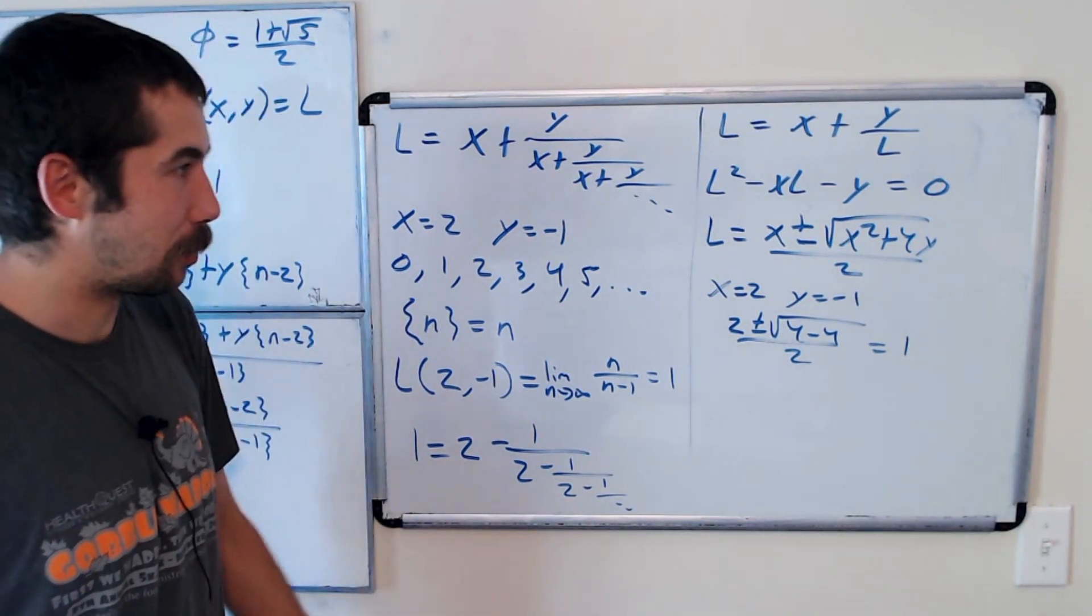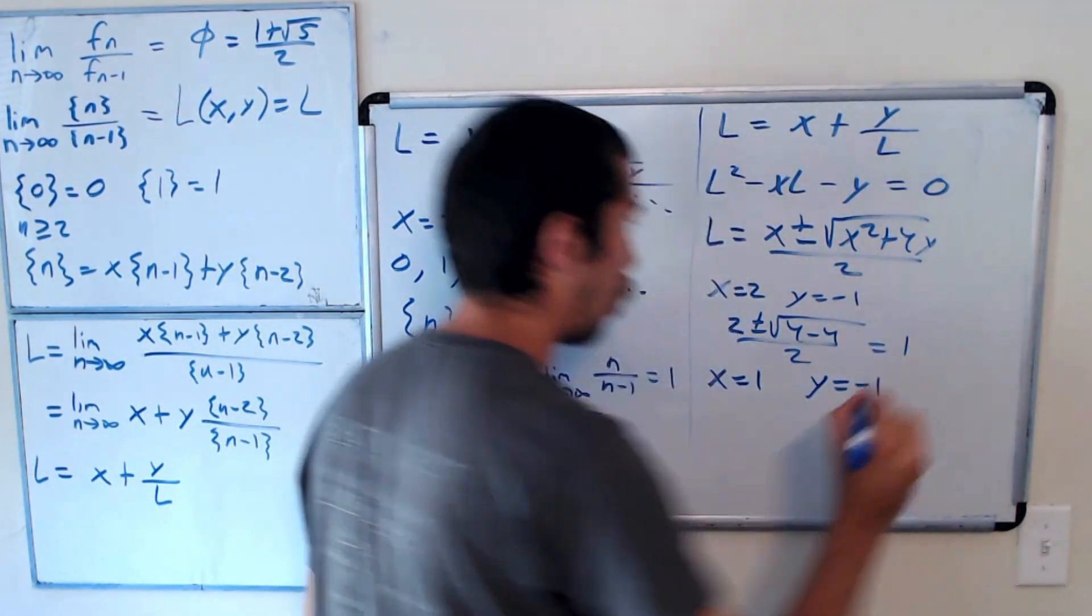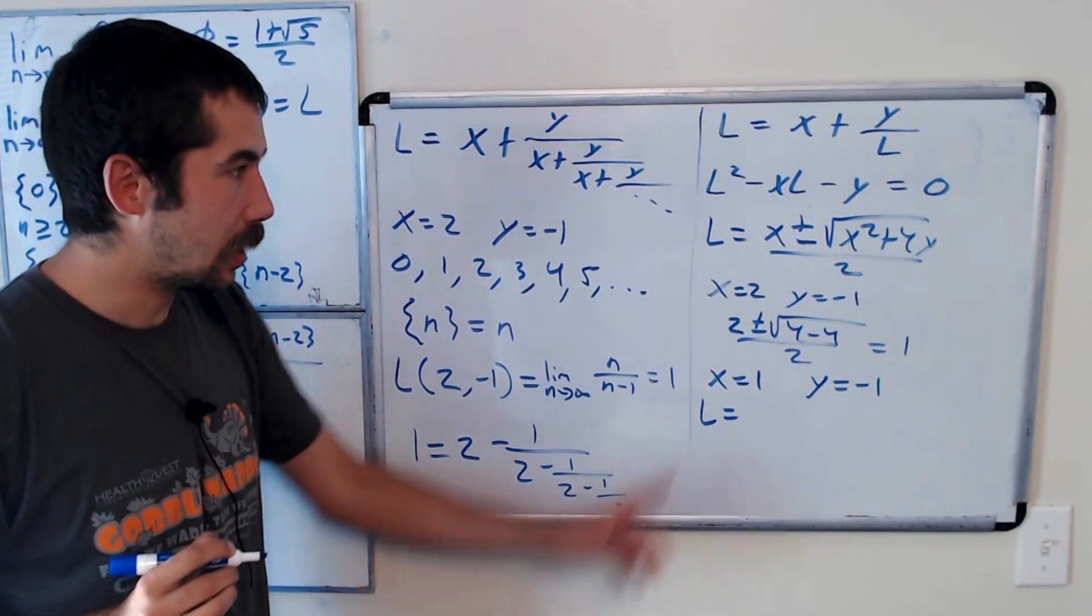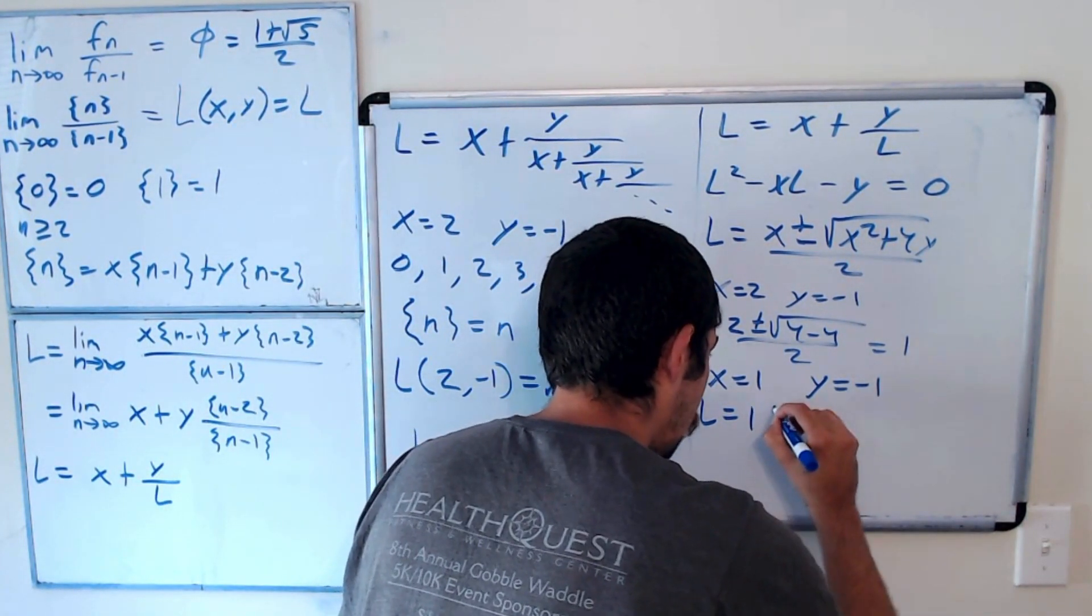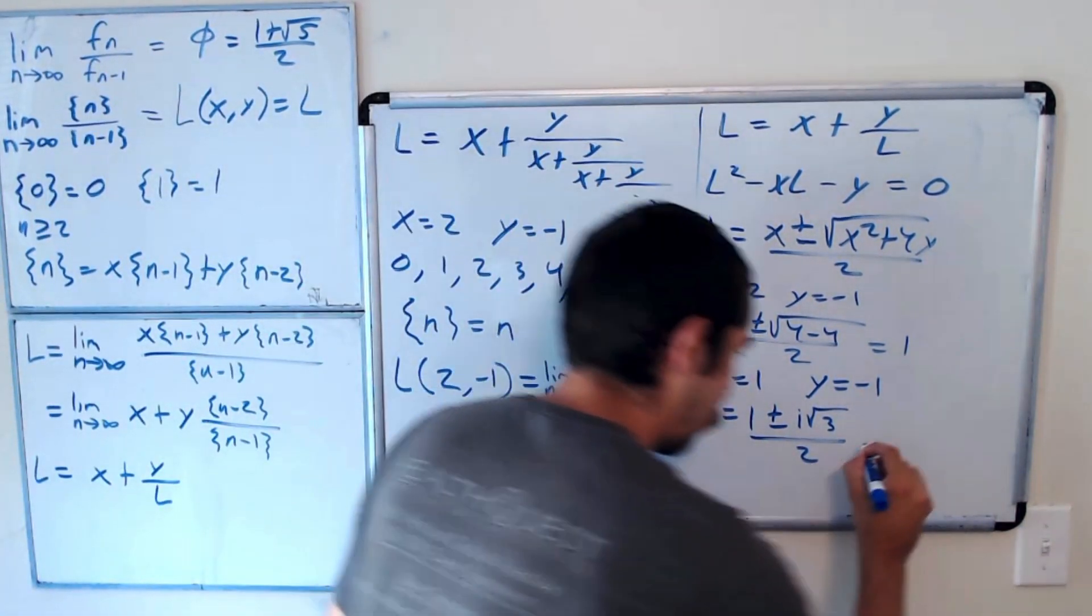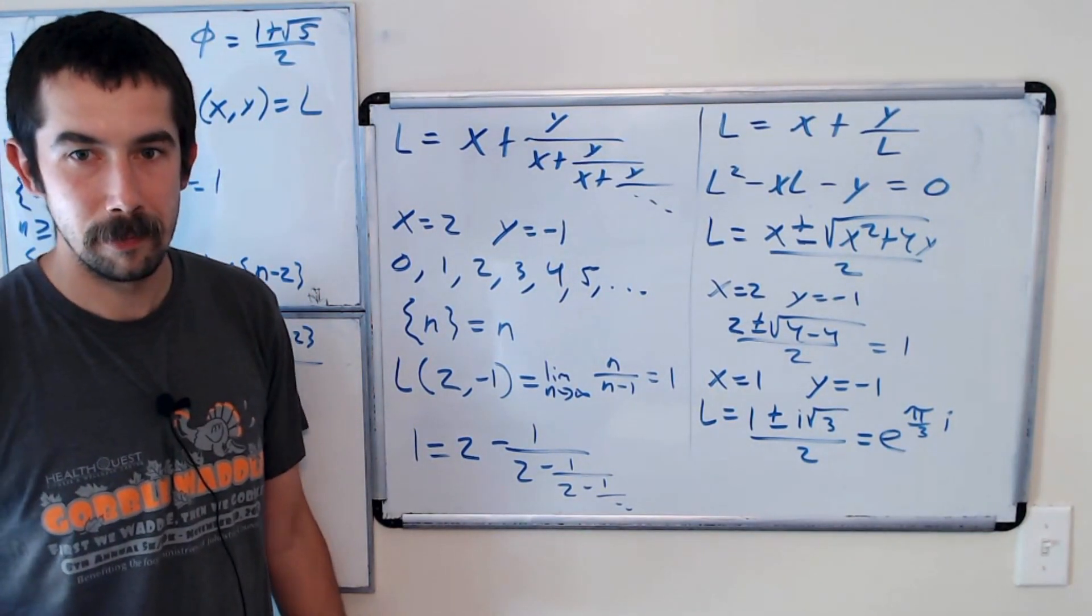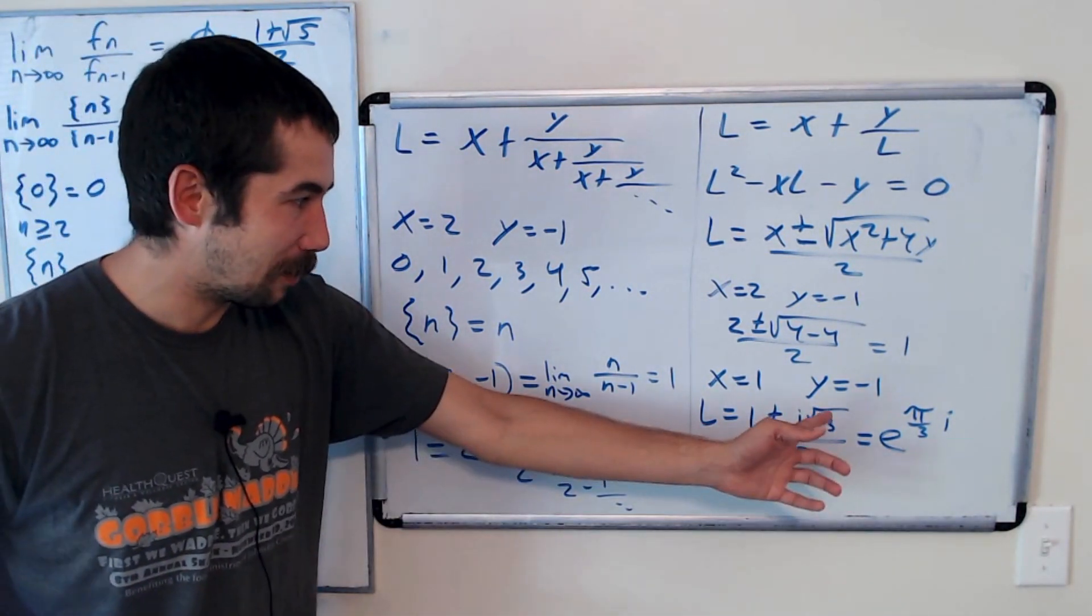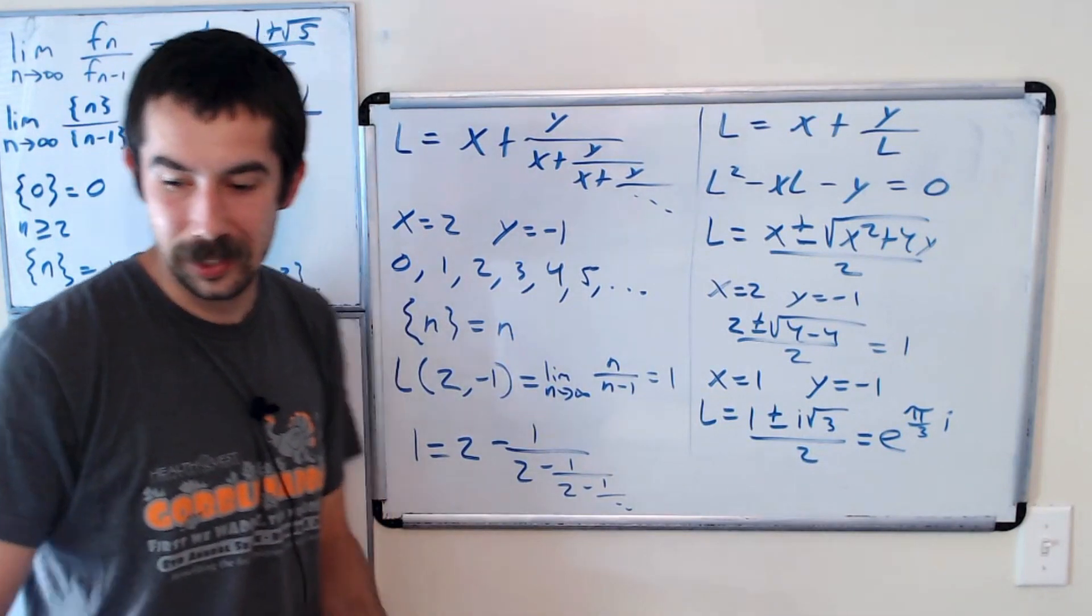And now let me show you something that I found pretty interesting. What if we made this term in here negative? So let's say we did x equals 1 and y equals negative 1. Well, then L would be 1 plus or minus the square root of negative 3 all over 2. So 1 plus or minus i root 3 over 2, which is equal to e to the pi over 3 i or negative pi over 3 i, depending on if it's plus or minus. And so what is this sequence whose ratio converges to this imaginary number? Let's take a look at that sequence.